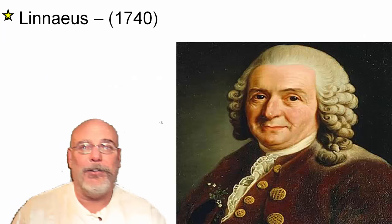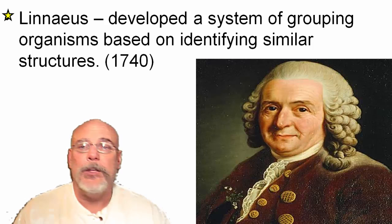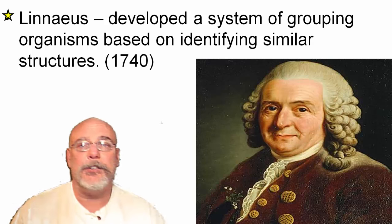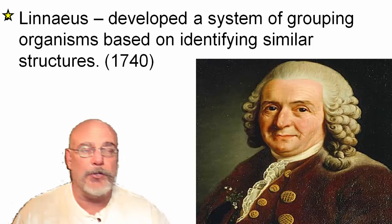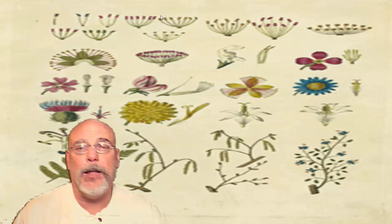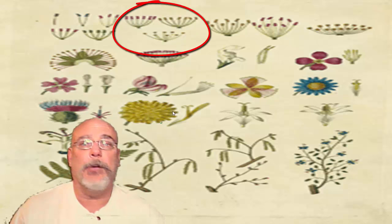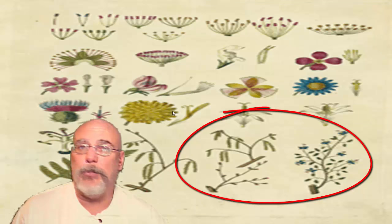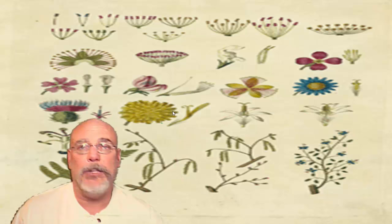Many years after Aristotle — almost another 2,000 years — another fellow came along: Carolus Linnaeus, who lived in the 1700s. He developed a system of organizing organisms based on similar characteristics or similar structures. You can see some of his drawings, and you may notice that different species have things in common — some flowers are red, different trees might have blossoms or different leaf shapes.